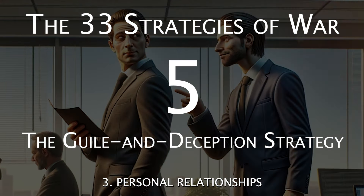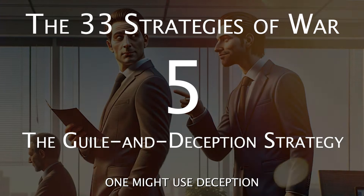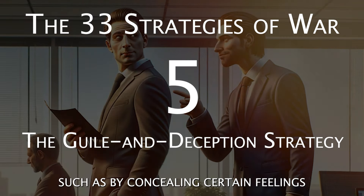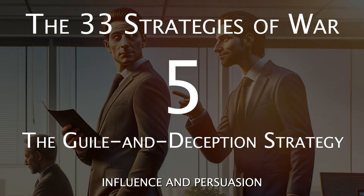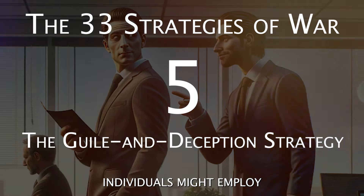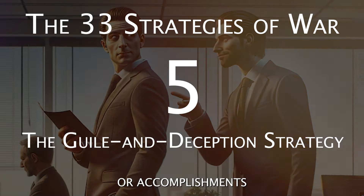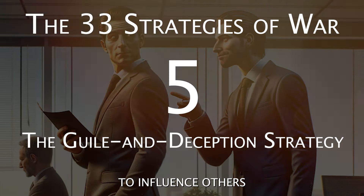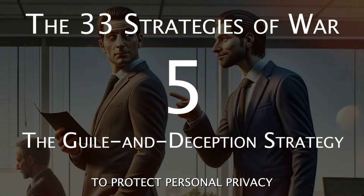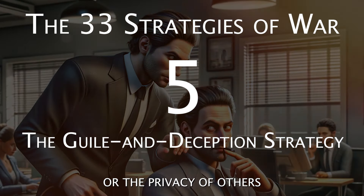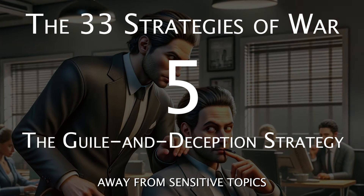Three: personal relations. In conflict resolution, one might use deception to defuse a situation, such as by concealing certain feelings or intentions to avoid escalation. In influence and persuasion, individuals might employ subtle deception in everyday interactions — like exaggerating stories or accomplishments — to influence others' perceptions or decisions. Sometimes, guile is used to protect personal privacy by withholding information or diverting attention away from sensitive topics.